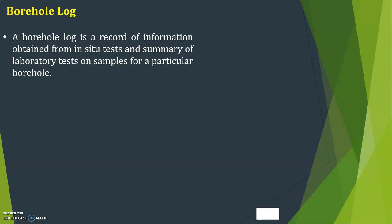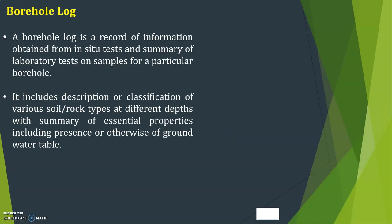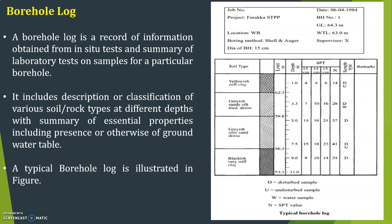The last topic is the borehole log. A borehole log is a record of information obtained from in-situ tests and a summary of laboratory tests on samples for a particular borehole. It includes description or classification of various soils or rock types at different depths, with a summary of essential properties including presence or otherwise of the groundwater table. A typical borehole log is illustrated in the figure, and the test report includes job number, project, date, location, boring method, diameter, ground level, water table level, and supervisor name.